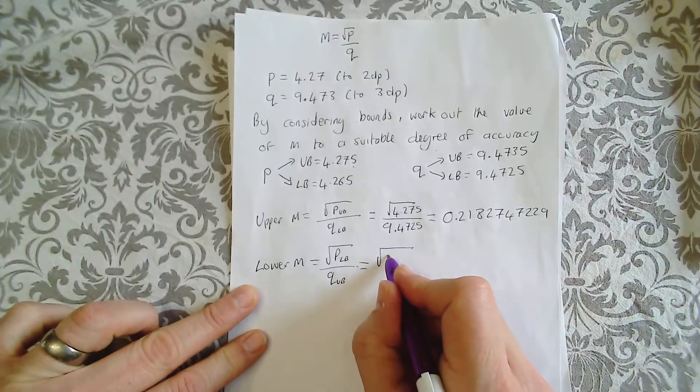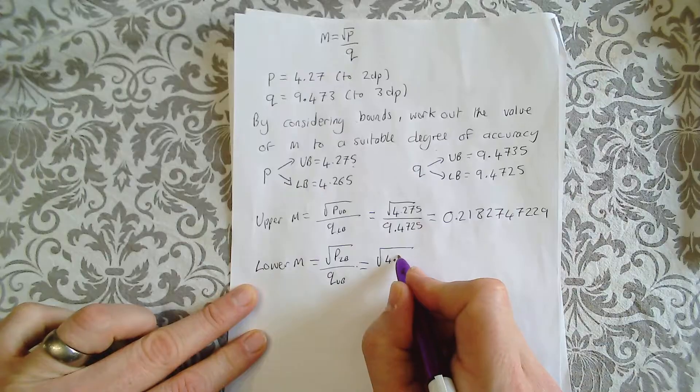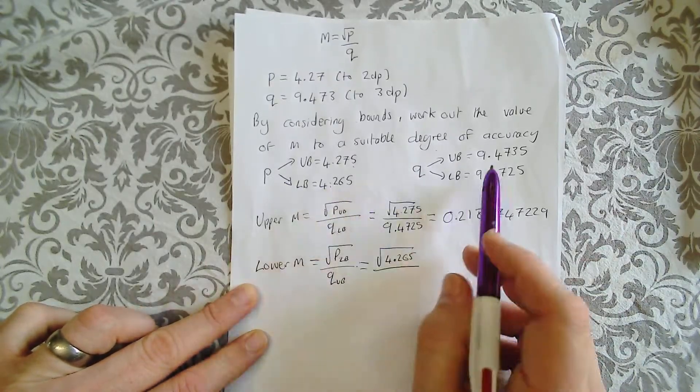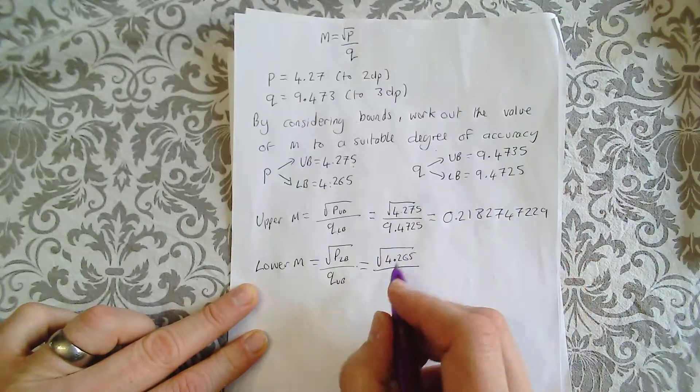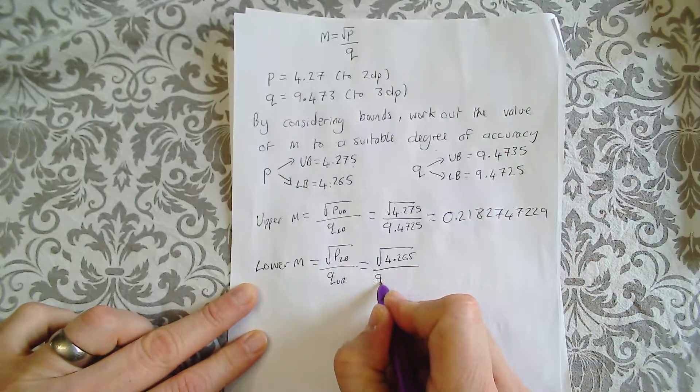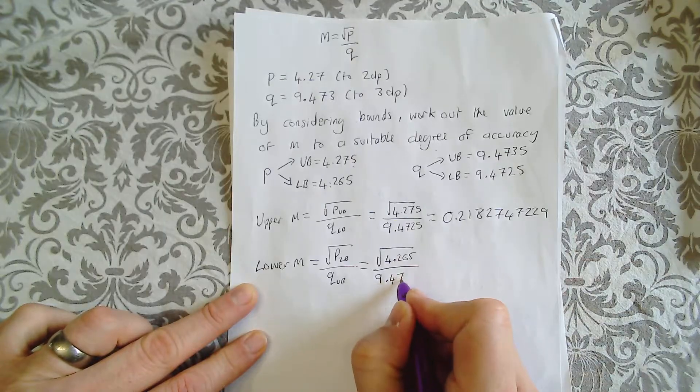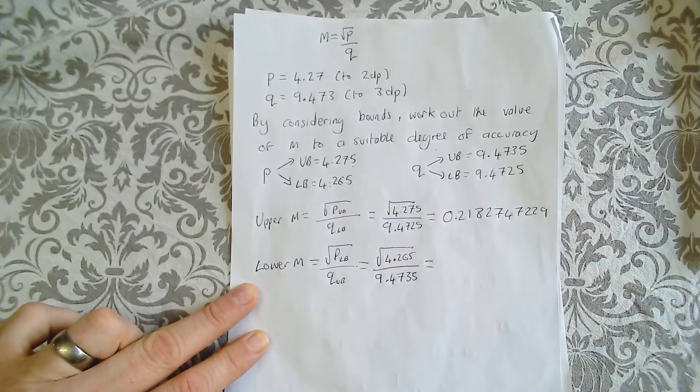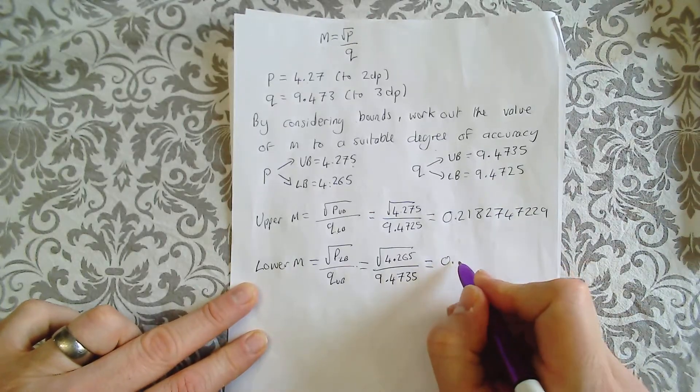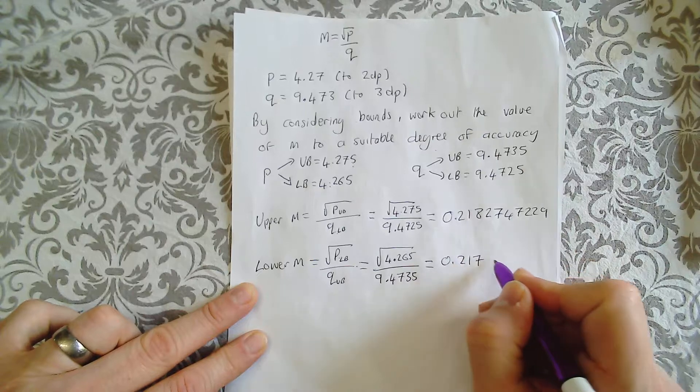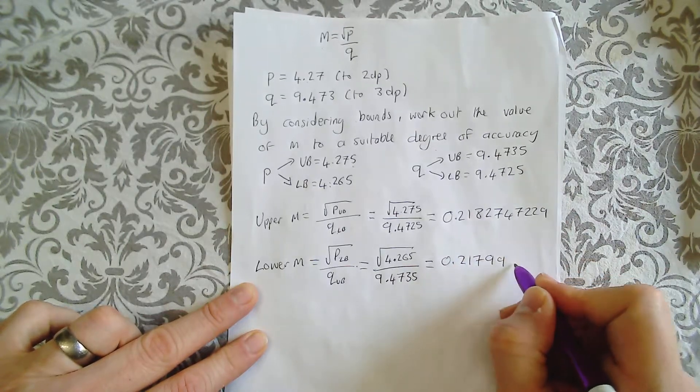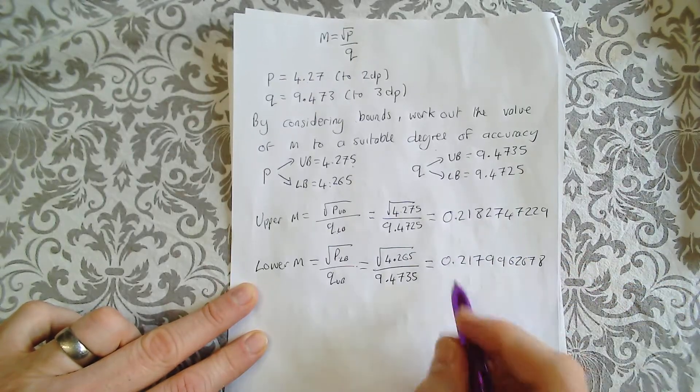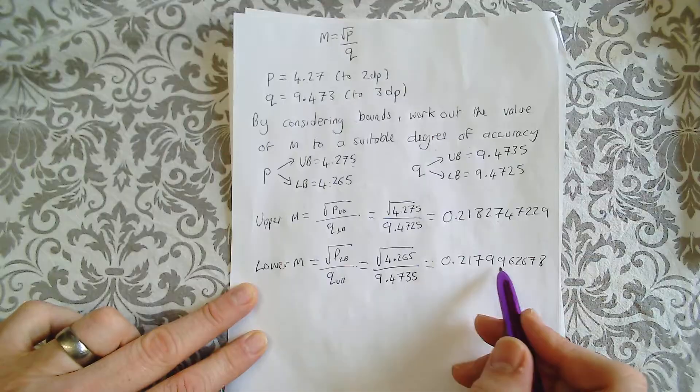So it's going to be 4.265 square rooted at the top. Just get that from there. My upper bound from there, which would be 9.4735. There you go. I stuck that in the calculator earlier. 0.2179962678. So that's my upper M, that's my lower M.